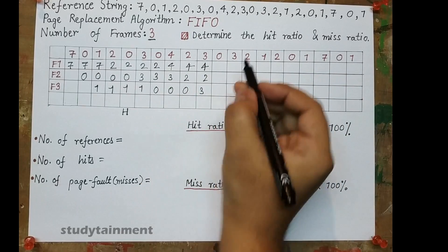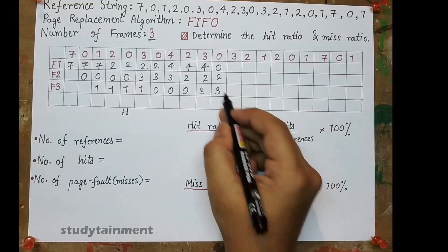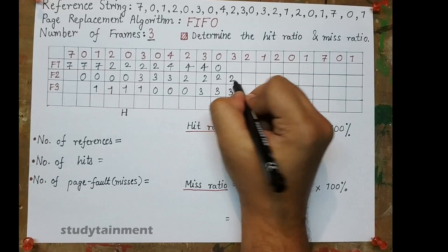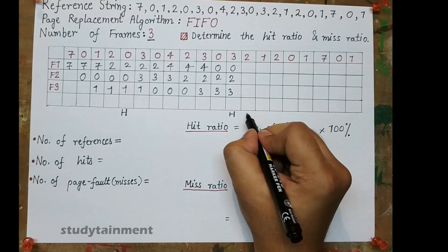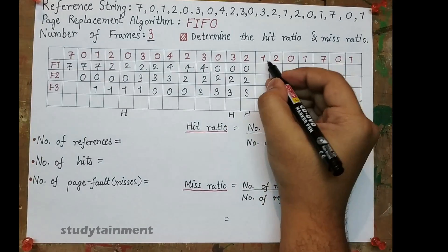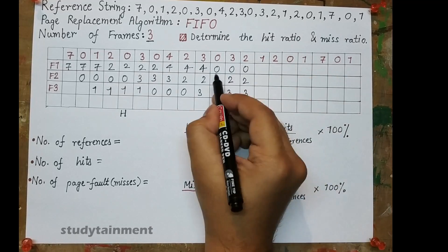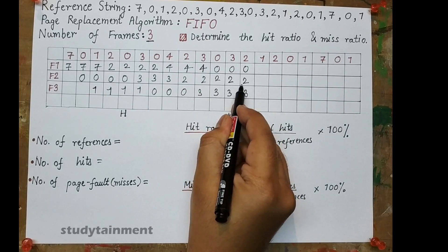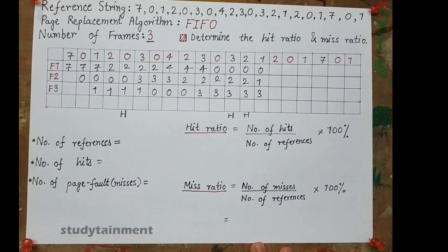Now 4 is the oldest. 3 is already present and 3 came, so this is a hit. 0 remains as it is. Next, 2 arrives and is already present — this is also a hit. 0 and 3 remain as they are. Then 1 arrives and is not present, so we replace the oldest. 0 occurred 3 times, 2 for 5 times, and 3 for 4 times — so 2 is the oldest and will be replaced.